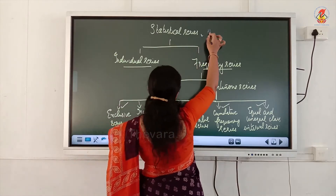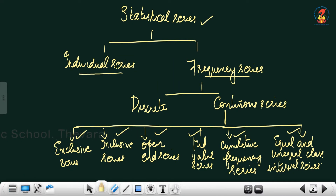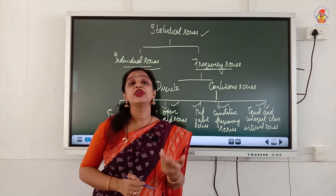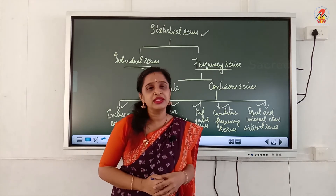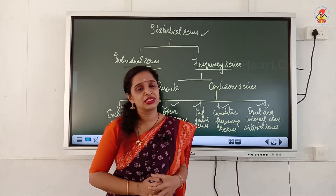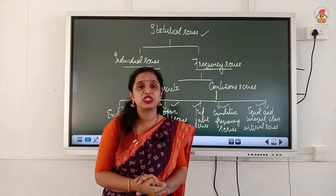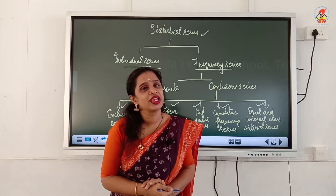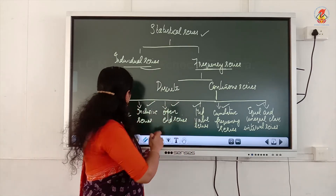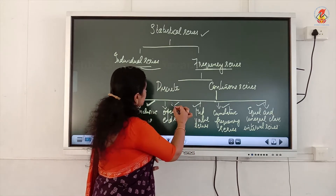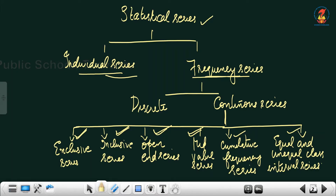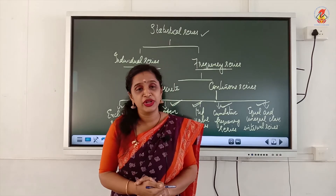In the table, statistical series is divided into individual and frequency series. In frequency series we have two divisions: discrete series and continuous series. We finished discussing discrete series and today we move on to continuous series. The continuous series is again divided into exclusive series, inclusive series, open-ended series, mid value series, cumulative frequency series, and equal and unequal class interval series.